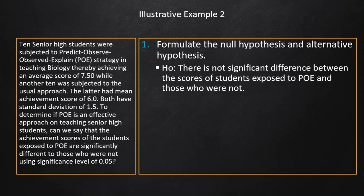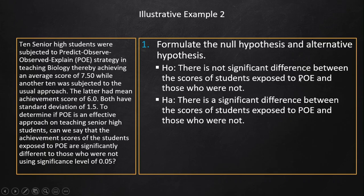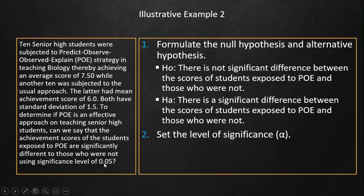Step 1: Null hypothesis — there is no significant difference between the scores of students exposed to POE and those who were not. Alternative hypothesis — there is a significant difference between the scores of students exposed to POE and those who were not. The level of significance is alpha = 0.05.